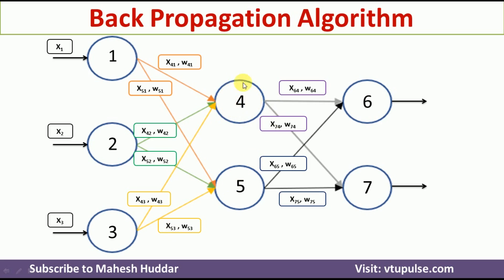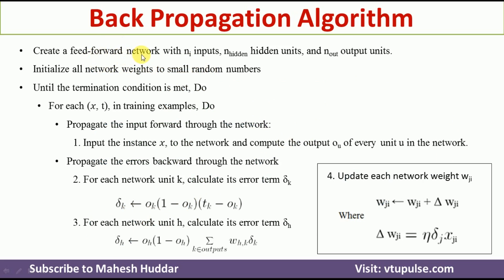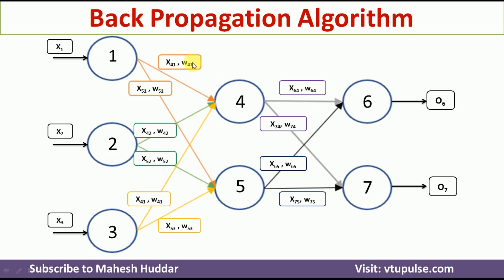We don't have any direct input to units 4 and 5, so we don't have values for x64, x74, x65, and x75. What we do is calculate the output of units 4 and 5, and those outputs will be given as input to units 6 and 7. Finally, we get outputs O6 and O7. This is how we construct the feed-forward network. Once constructed, for every weight we assign small random values in the range of minus 1 to plus 1, and in every iteration we modify these weights until we are satisfied with the outputs.